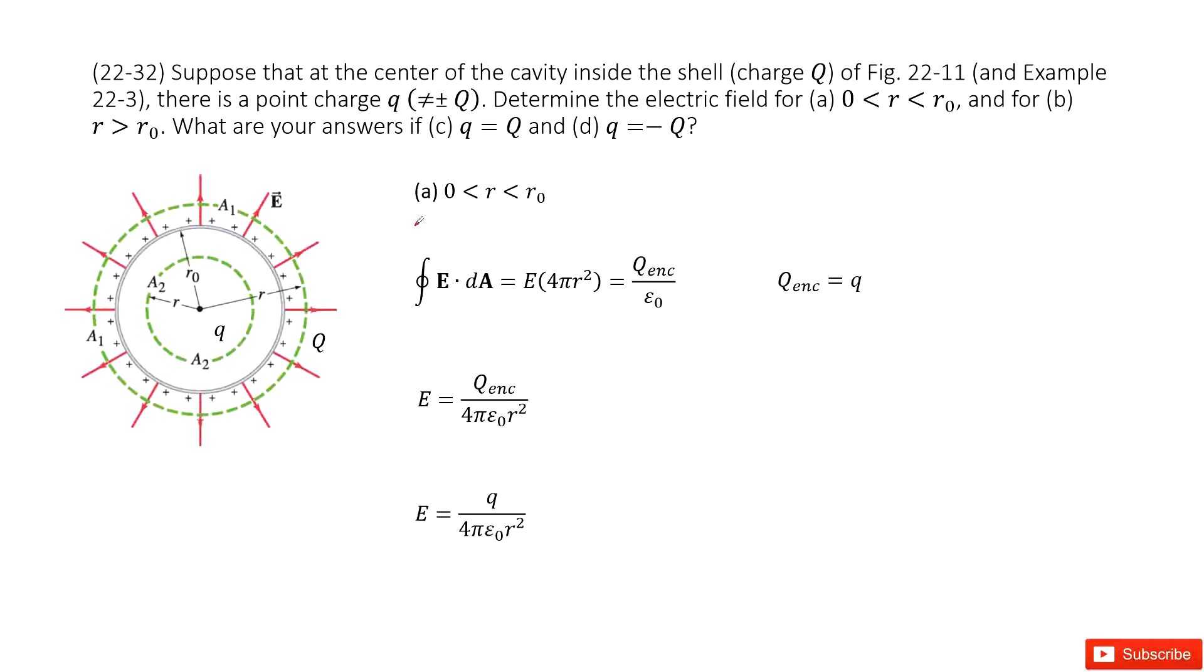Chapter 22 is about Gauss's law. We have a shell with uniformly distributed charge Q, and inside this shell we have a point charge q at the center. The radius for this shell is R0.